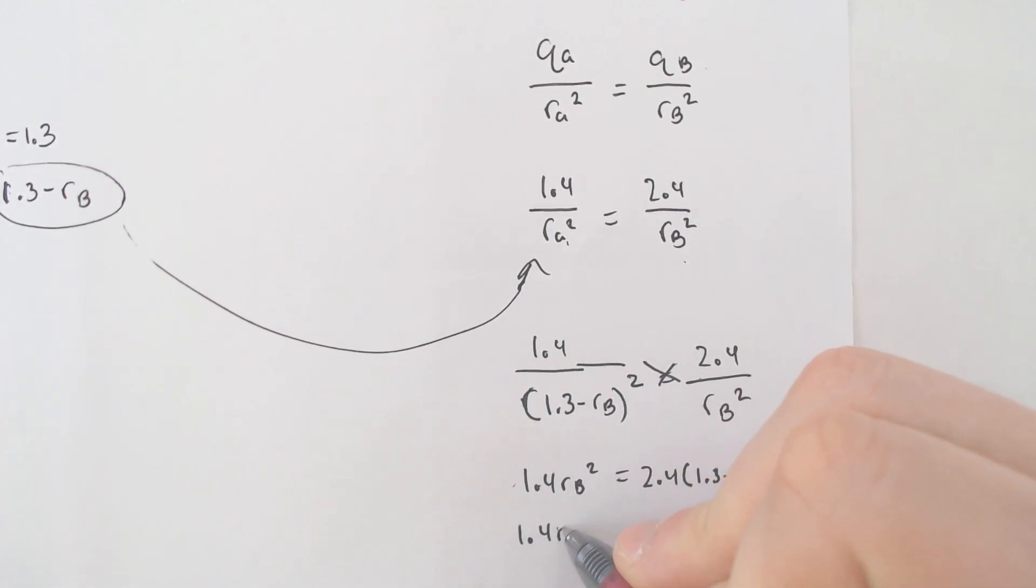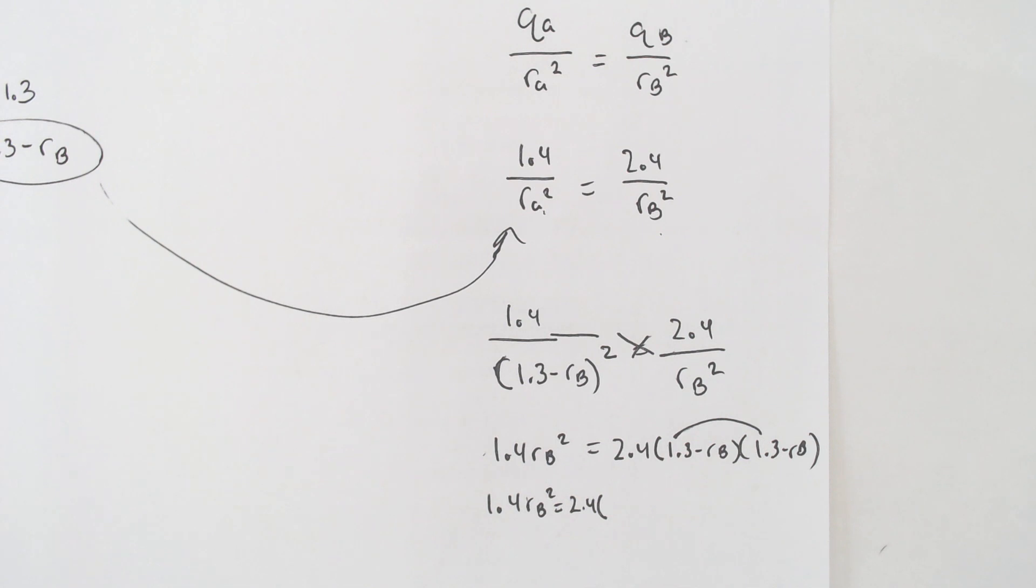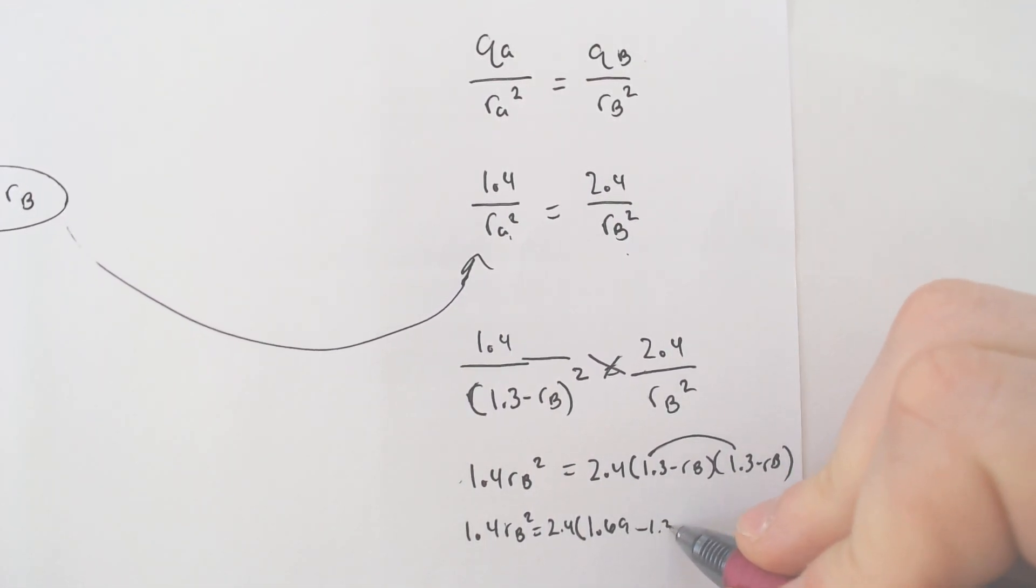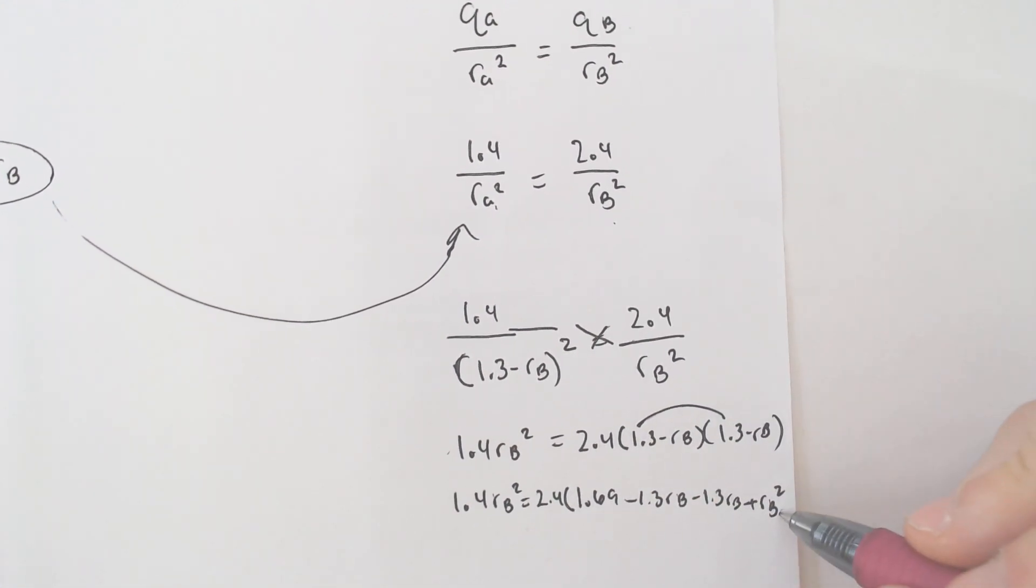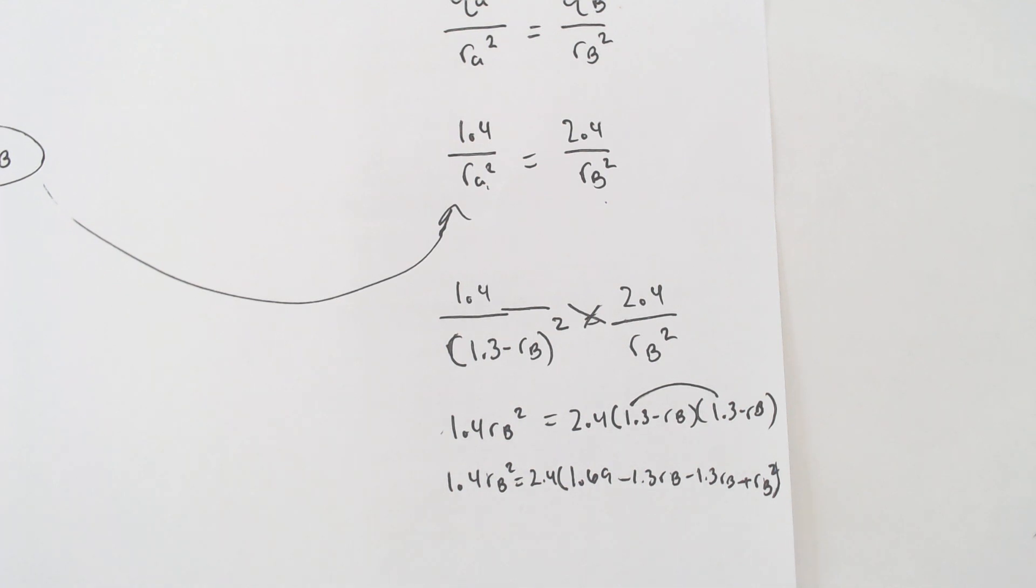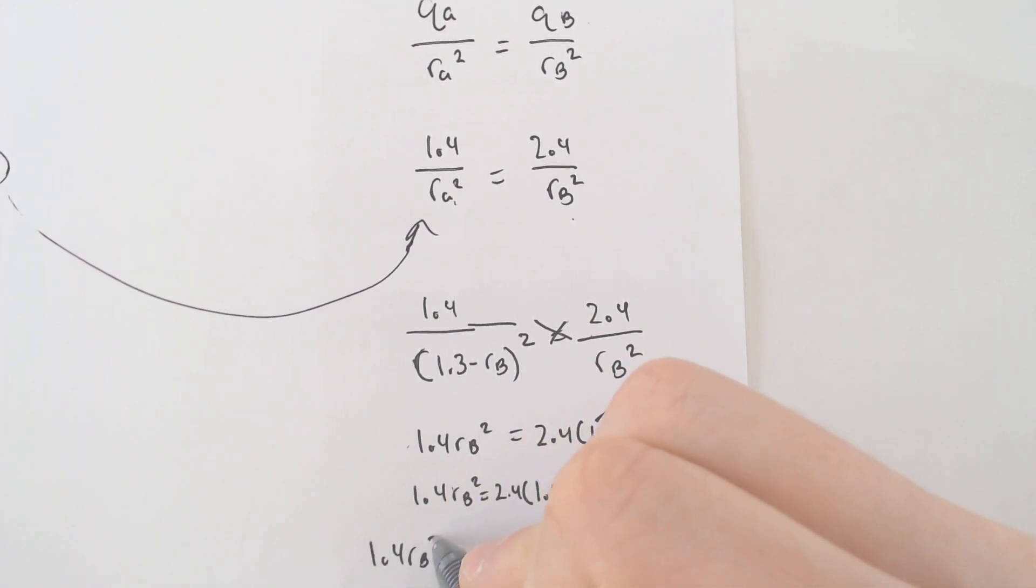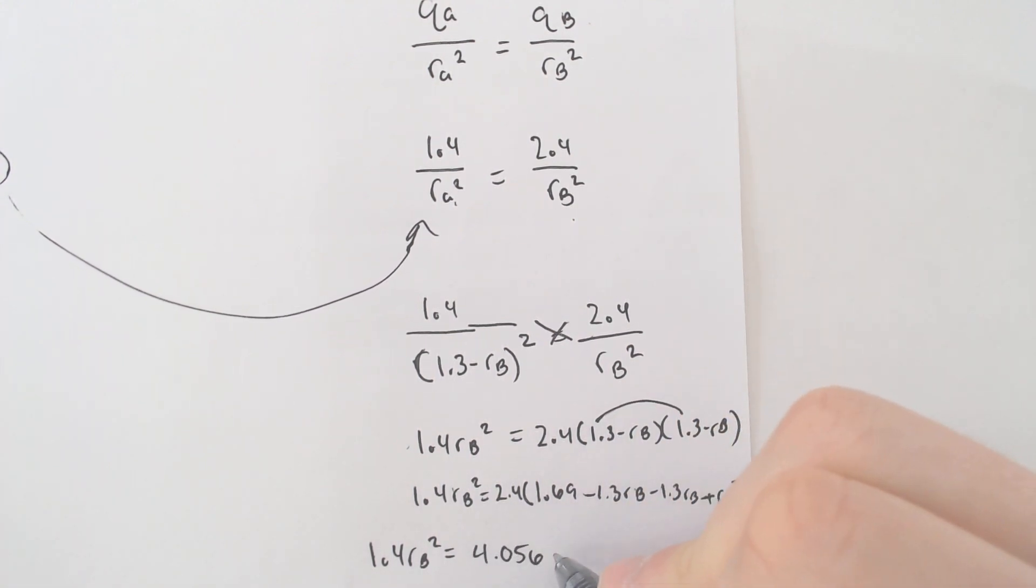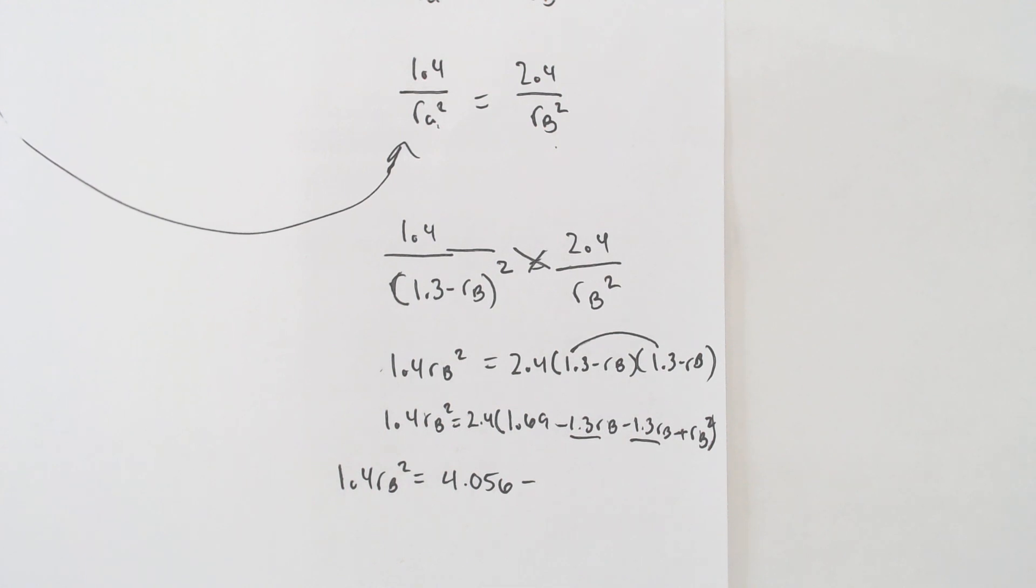So we're going to foil that. 1.4 radius of B squared would equal, I'm going to write the 2.4 in front, and we have 1.3 times 1.3 is 1.69 minus a 1.3 radius of B minus another 1.3 radius of B plus a radius of B squared from foiling that out. You would distribute the 2.4. So 2.4 times the 1.69 you end up with 4.056. So I'm at 1.4 radius of B squared would equal 4.056 minus 2.6 times 2.4 ends up being minus 6.24 radius of B and then 2.4 times radius of B squared is 2.4 radius of B squared.